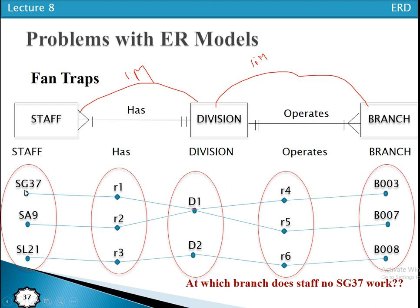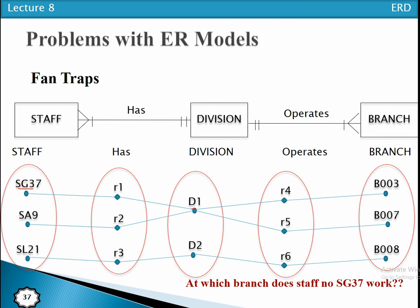ST37 is a staff member — but which branch is he working at? We see that a relationship between entity types exists, but the pathway between certain entity occurrences is ambiguous. The path is not clear: ST37 belongs to which branch? This pathway is ambiguous. Whenever a relationship exists but the pathway is not clear, that is called a fan trap problem.